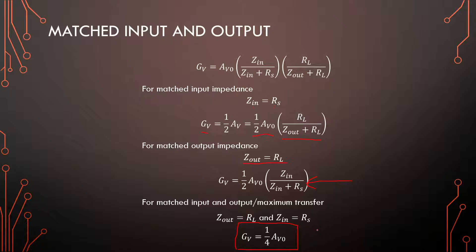For matched input and output — setting both the same — GV is just a quarter of the maximum gain. This equation is very handy when designing with matched inputs and outputs, so that your total gain required is a quarter of the maximum gain, or equivalently, four times the total gain equals the maximum gain.